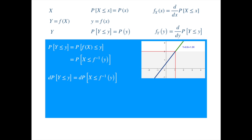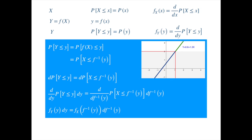We can write the differential on the left-hand side alternatively as follows. Analogously, the differential on the right-hand side becomes. Looks complicated, but it really is the same differential in terms of X, which is the inverse of Y. And we know the derivative of the distribution function is just the density, so we get. And isolating the density of Y on the left-hand side, we get.